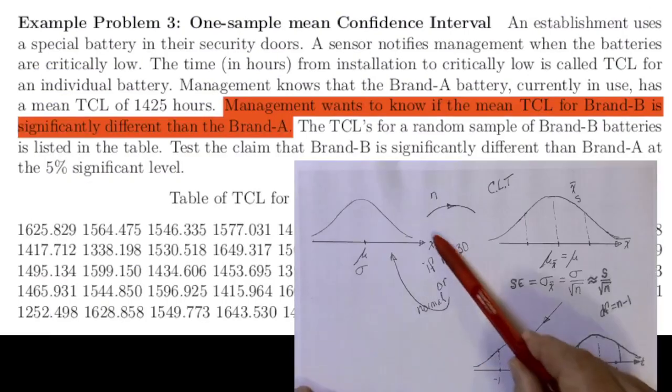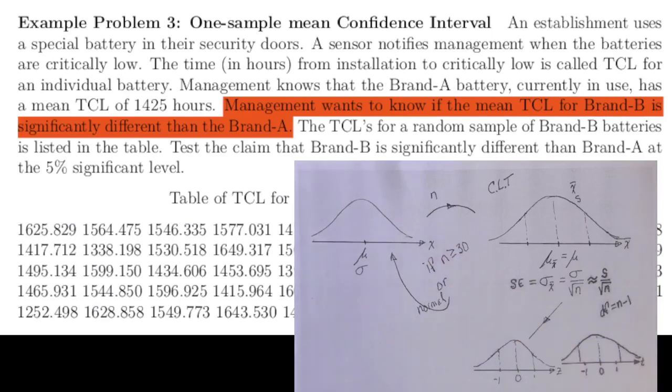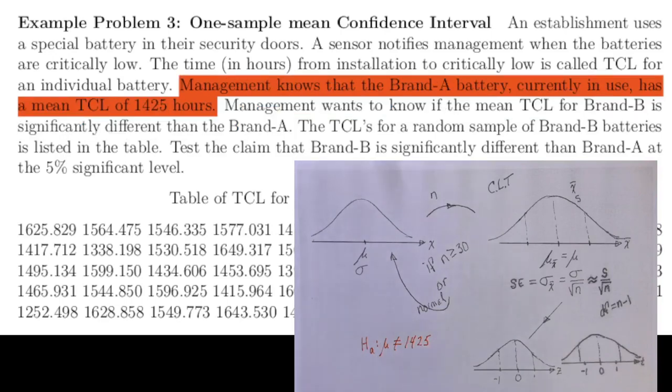Our variable of interest is the time it takes for brand B batteries to become critically low and need to be replaced. That variable will be distributed with a mean and a standard deviation, that mean that we're interested in studying. Management wants to know if that mean is significantly different than 1,425 hours, which is the mean for brand A batteries.